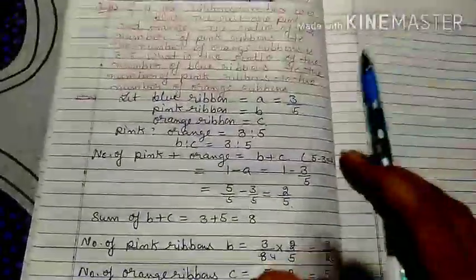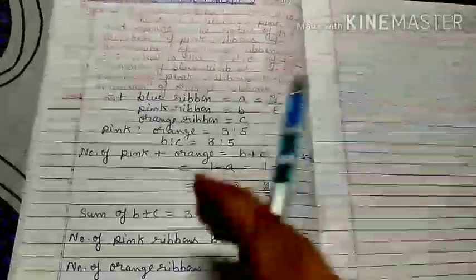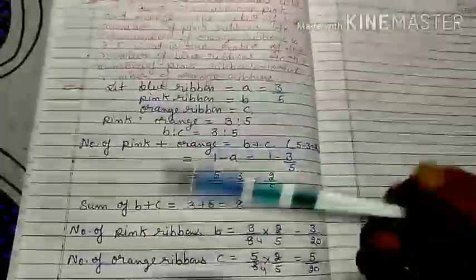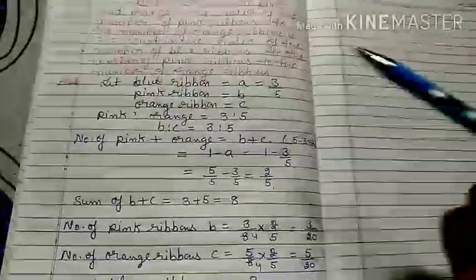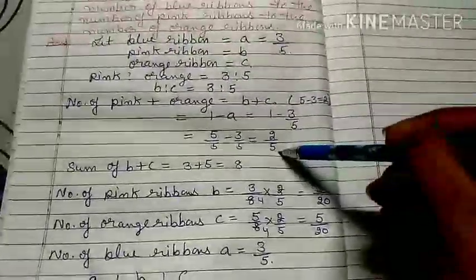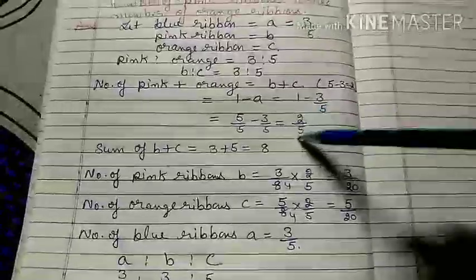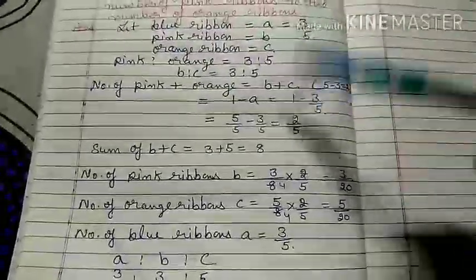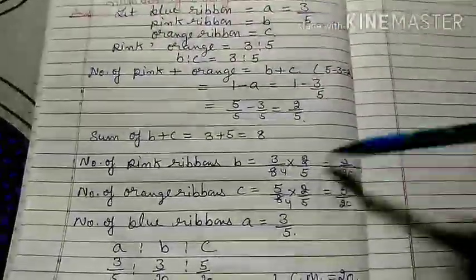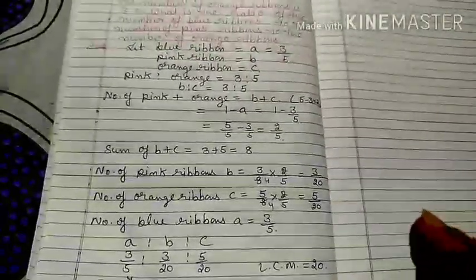To summarize: the ribbon in the box is divided into 5 parts — 3 parts go to blue, leaving 2 parts for pink and orange. Those 2 parts are further divided in the ratio 3:5 between pink and orange. Converting to whole number ratio by multiplying by the LCM of the denominators, we get blue:pink:orange = 12:3:5. Thank you, have a nice day.